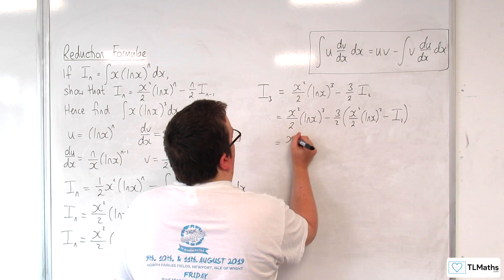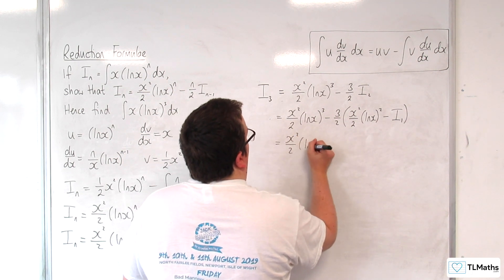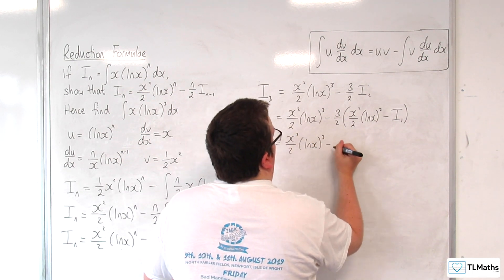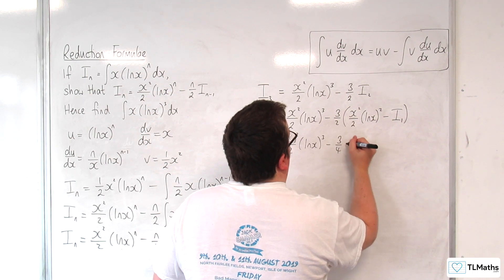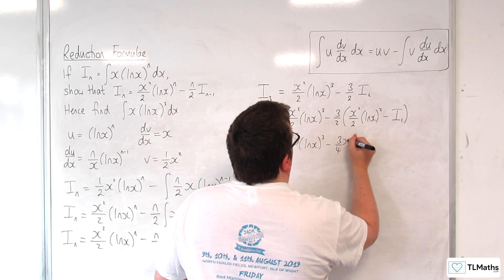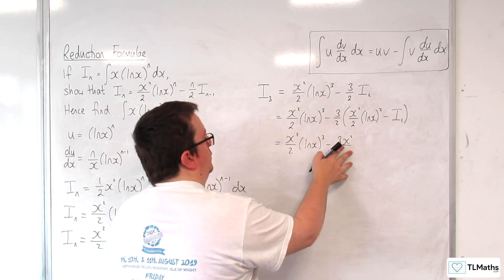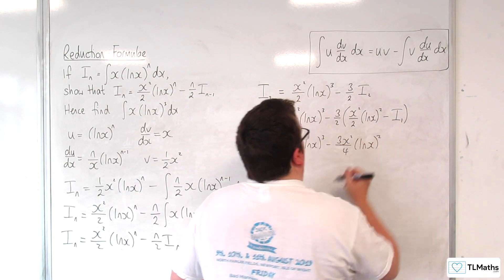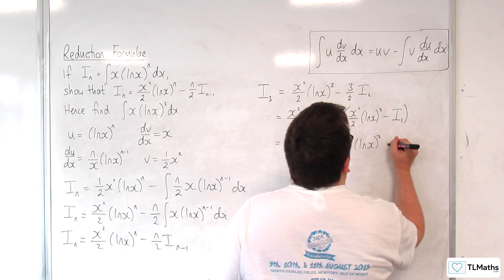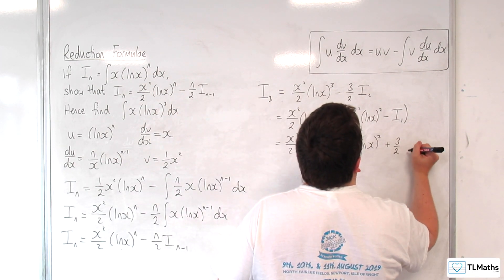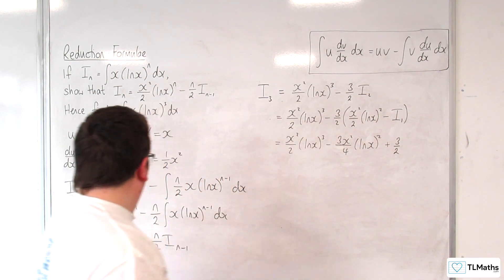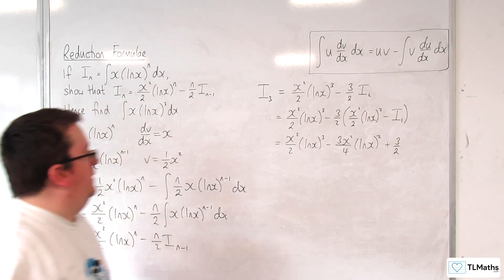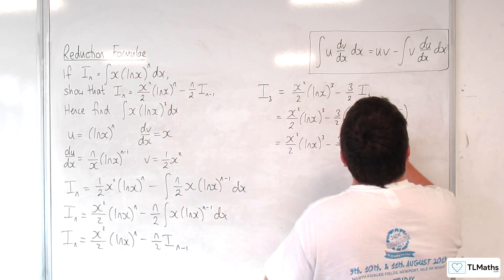So let's simplify this, we've got x squared over 2, log of x cubed, take away 3 quarters of x squared, so 3x squared over 4, I could write that as log of x squared. Plus 3 halves of i_1, so substituting n is 1 into this. So let's go on to the next line.